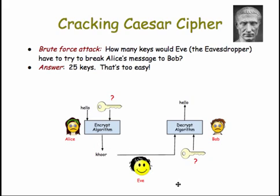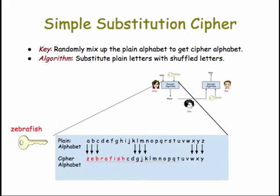Let's look at a slightly more complex cipher. Caesar cipher is an example of what's called a simple substitution cipher, which means generally that you randomly mix up the alphabet to get a cipher alphabet, and then you substitute plain letters with shuffled letters.